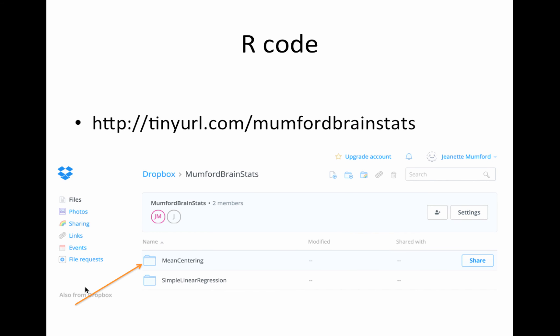There's a little bit of R code for this. You can either go to this tiny URL Mumford BrainStats, or I will link to the R script in the info box, and you can regenerate the data that are used in this example and run the models for comparison and tinker around with it if you'd like.